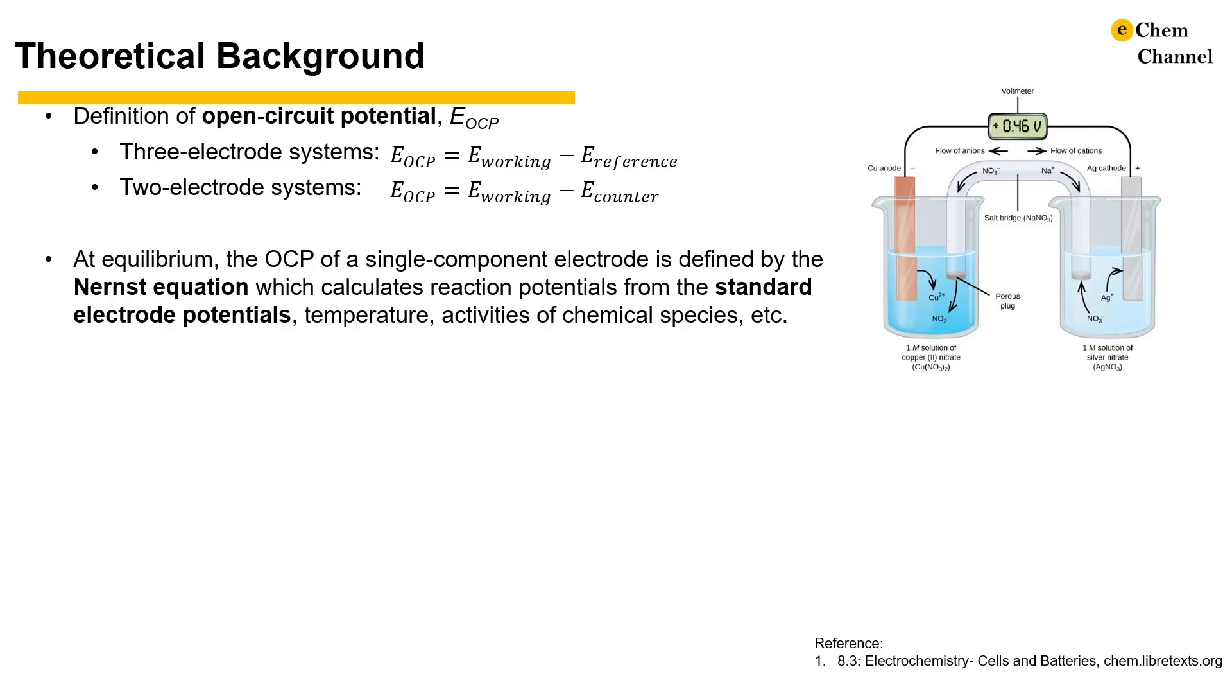An illustration of OCP measurement is shown on the right. The standard electrode potential for a two-electron transfer of copper reduction half-reaction is 0.34 volt, and the standard electrode potential for a one-electron transfer of silver reduction half-reaction is 0.8 volt. Therefore, the difference between them gives us a 0.46 volt open circuit potential.